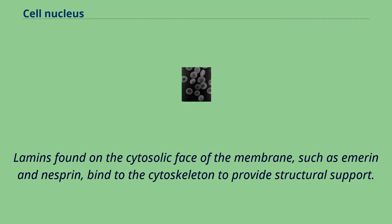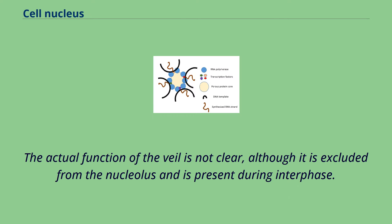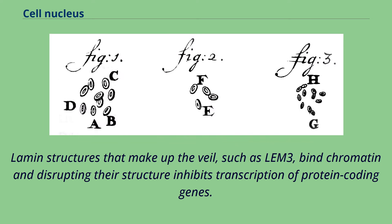Lamins are also found inside the nucleoplasm where they form another regular structure known as the nucleoplasmic veil, which is visible using fluorescence microscopy. The actual function of the veil is not clear, although it is excluded from the nucleolus and is present during interphase. Lamin structures that make up the veil, such as LEM3, bind chromatin and disrupting their structure inhibits transcription of protein-coding genes.